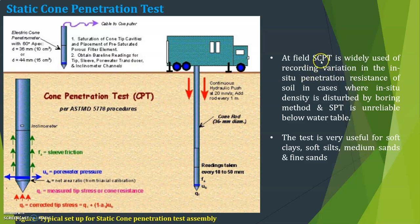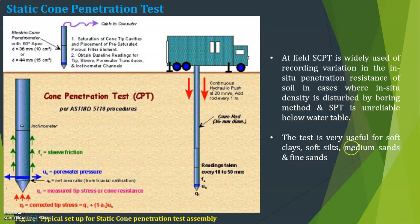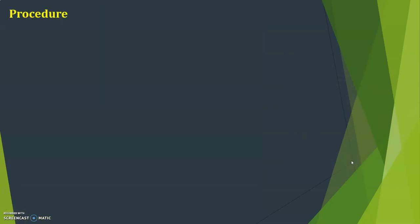The static cone penetration test is widely used for recording variation in the in-situ penetration resistance of soil, especially in cases where in-situ density is disturbed by boring methods and SPT is unreliable below the water table. The test is very useful for soft clays, soft silts, medium sands, and fine sands.